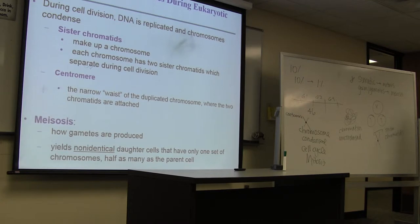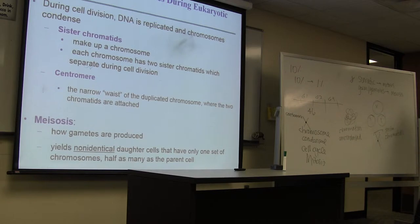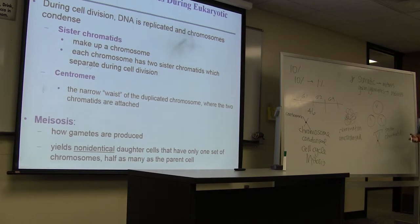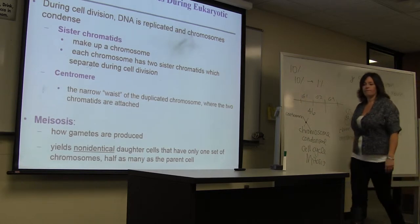Meiosis is going to be a very specific process with its similarities and differences compared to mitosis. Meiosis is going to involve these germ cells — these gametes, your eggs and your sperm. Like we said, we're going to focus on the somatic cells today.